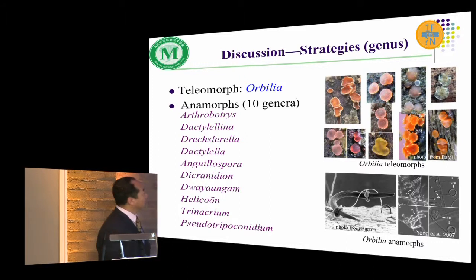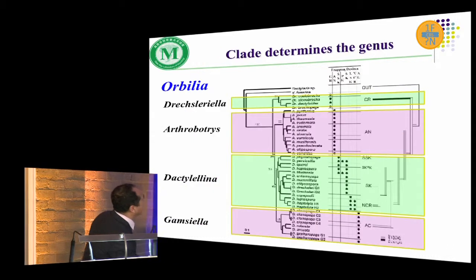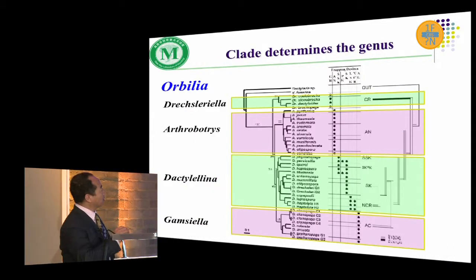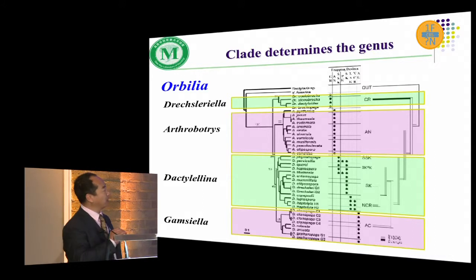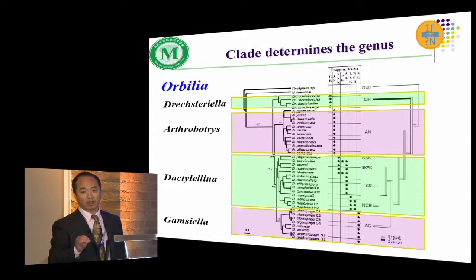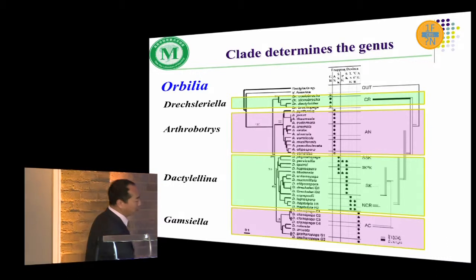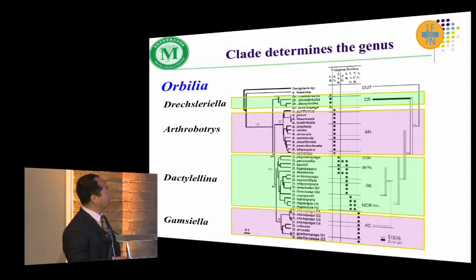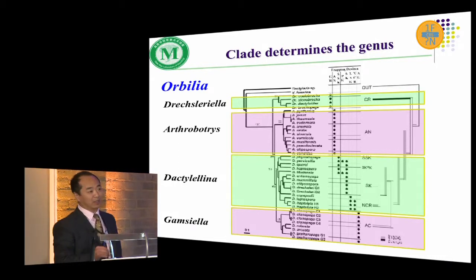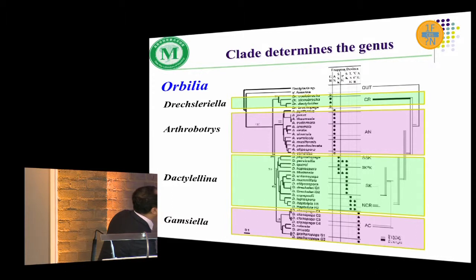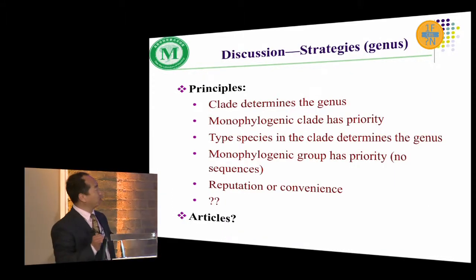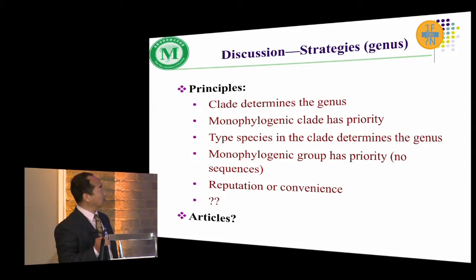Here is a tree based on the nematode-trapping fungi. Those four anamorphic genera just form a clade, and the clade is also related to the trapping structures. Those genera are already well accepted, which means the genus should be clade-determined. So we should use clade to determine the genus, and I think we should probably propose some principles for treating the genus — just like: the clade determines the genus.